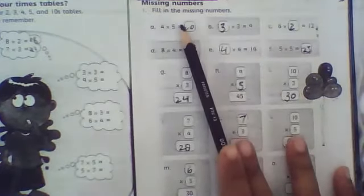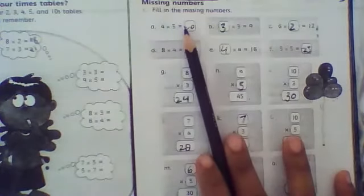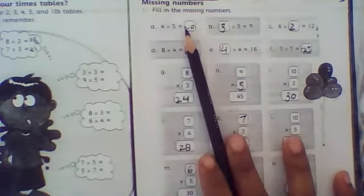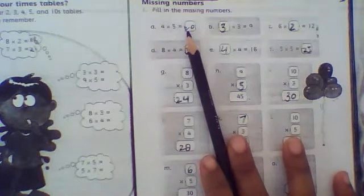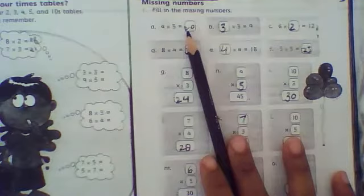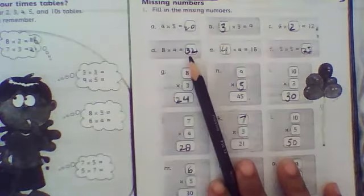Let's start the table of 8. 8 ones are 8, 8 twos are 16, 8 threes are 24, 8 fours are 32. Yes, 32 is the answer.